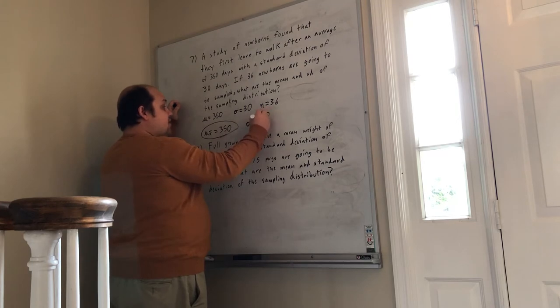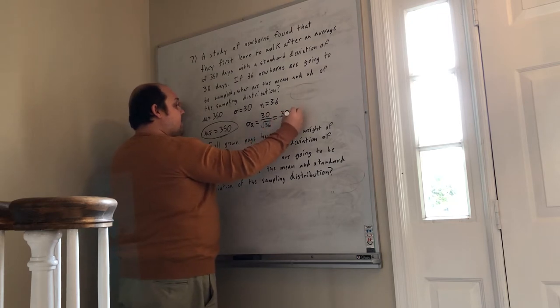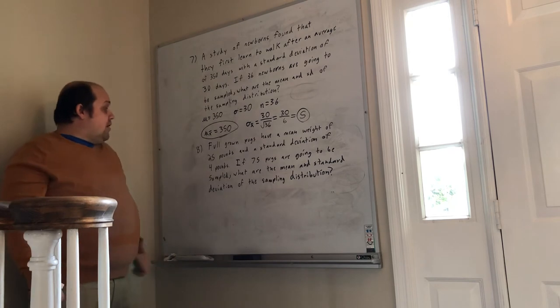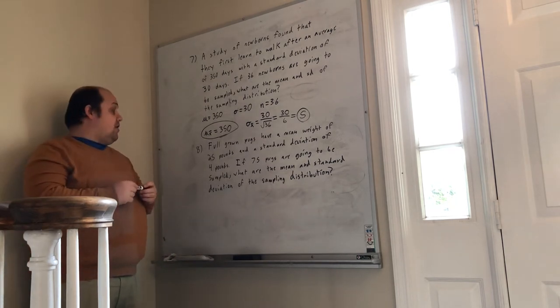In this case, it's going to become 30 divided by 6, or 5. When I go to do the second one, full-grown pugs have a mean weight of 25 pounds and a standard deviation of 4 pounds.